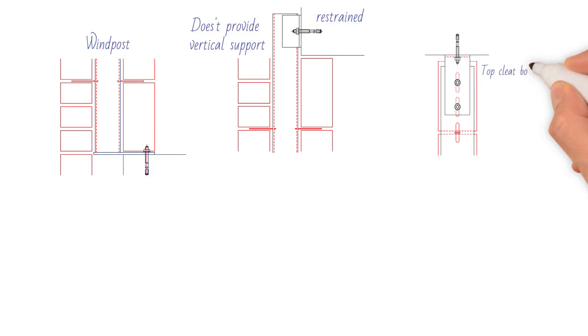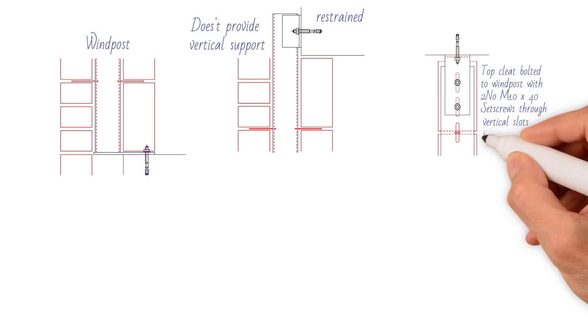To achieve this, the fixing detail between the windpost and the primary structural element is allowed to articulate vertically relative to the connection, typically through slotted bolt holes.